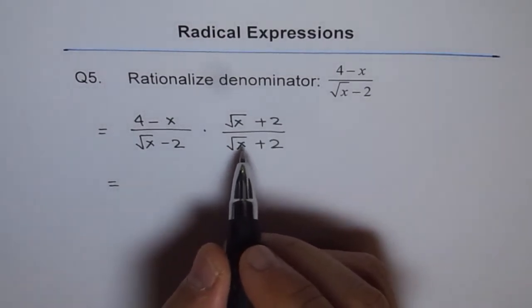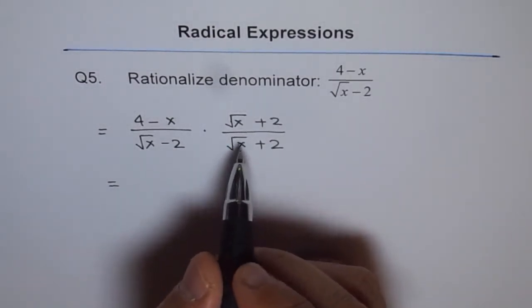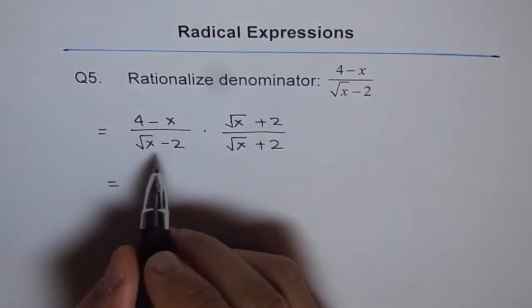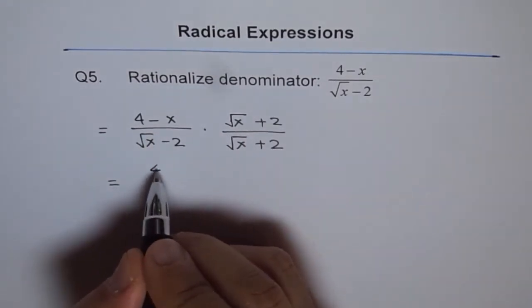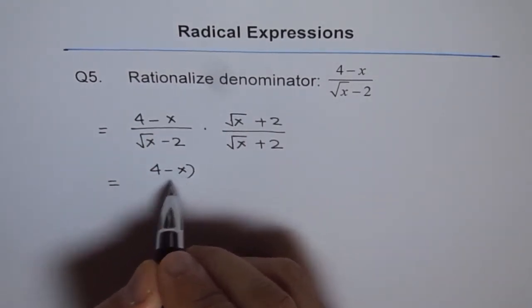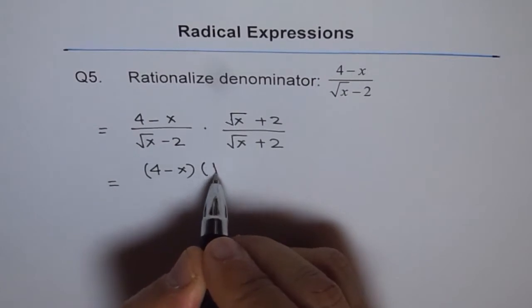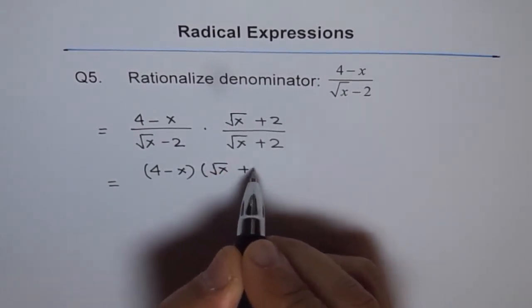Now, numerator, since we are rationalizing the denominator, keep the numerator as such. That means in factored form. So we will write this as 4 minus x within brackets times square root of x plus 2.